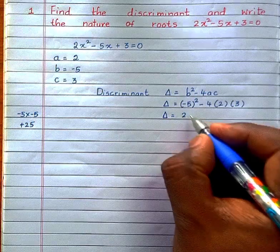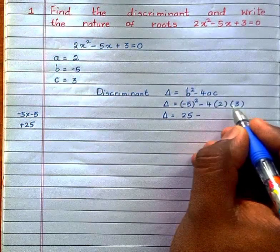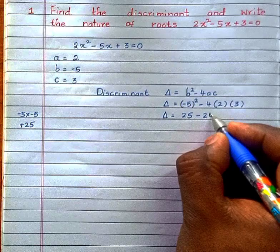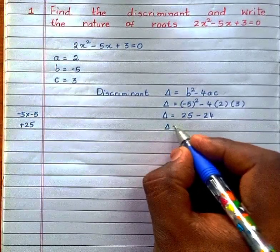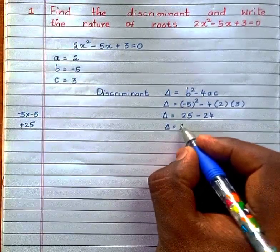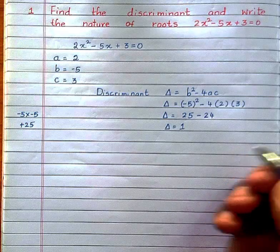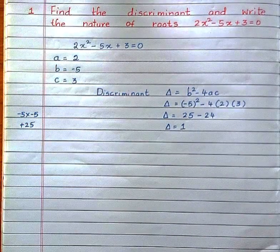25 minus 4 times 2 is 8, times 3 is 24. Now, Δ = 25 - 24 = 1. We got Δ or discriminant equals 1.